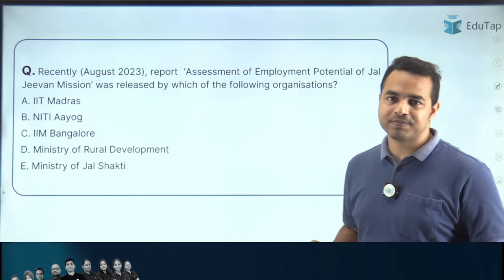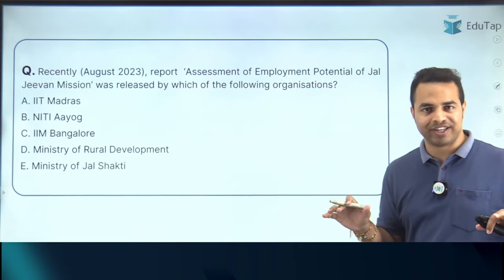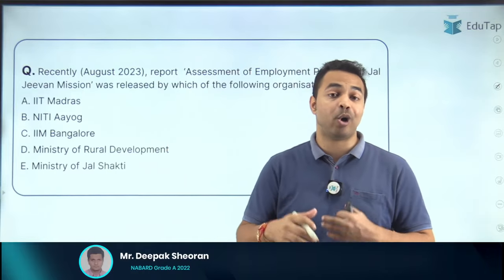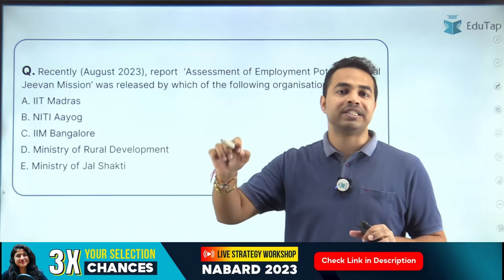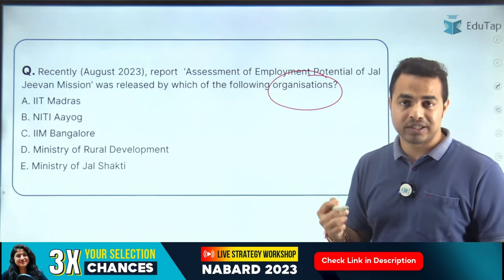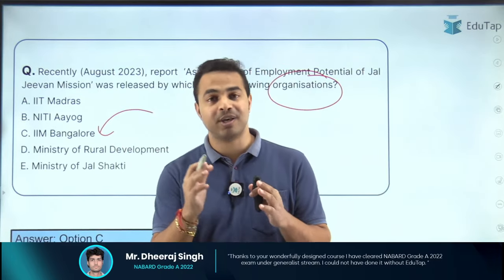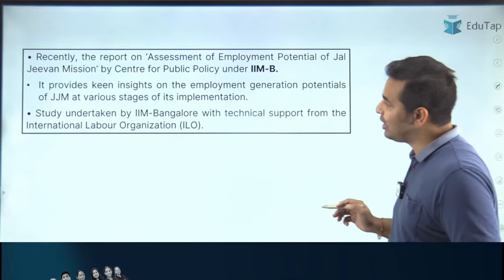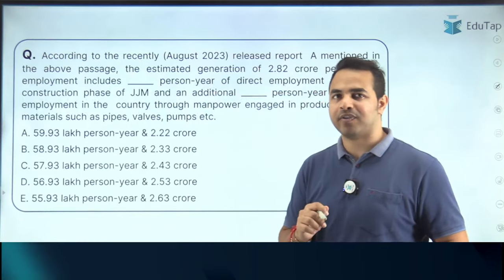The next question is on the 'Assessment of Employment Potential of the Jal Jeevan Mission'. We know Jal Jeevan Mission was launched to provide tap water to all households, and such large programs also create employment opportunities. This report was released by IIM Bangalore with technical support from the International Labour Organization (ILO). It provides keen insights on employment generation potential at various stages of the mission's implementation.